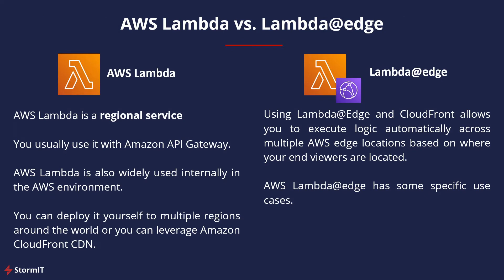What is the difference between AWS Lambda and Lambda at Edge? AWS Lambda is a regional service. If you need to use it globally, you can deploy it yourself to multiple regions or leverage Amazon CloudFront CDN. For internet-related apps, you usually use it with Amazon API Gateway. AWS Lambda is also widely used internally in the AWS environment. Using Lambda at Edge and Amazon CloudFront allows you to execute logic automatically across multiple AWS edge locations based on where your end viewers are located — that is the main difference. Lambda at Edge also has specific use cases which we will look at later.